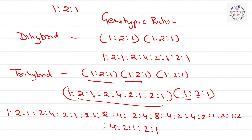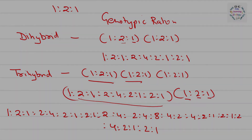So hopefully you can now easily calculate the phenotypic and genotypic ratio of dihybrid and trihybrid cross, just by remembering the ratio for monohybrid cross. Hopefully it is very easy for you. Please do subscribe to my channel Deep Learning Biology. Have a nice time!